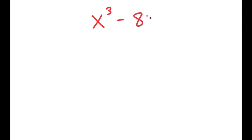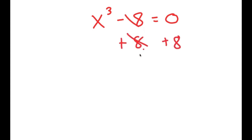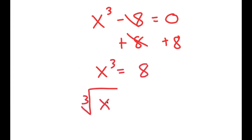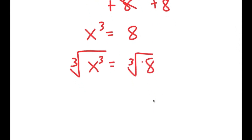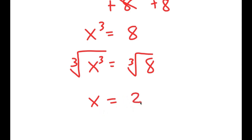In this video, I'm going to solve the equation x to the power of 3 minus 8 is equal to 0. How most people solve this equation is they add 8 on both sides, so they get x to the power of 3 is equal to 8. Then they take the cube root on both sides — the cube root of x cubed is x, and the cube root of 8 is 2 — so they get x equals 2, which is a solution.